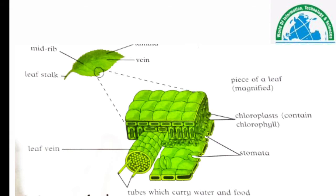Leaf میں veins یا tubes ہوتی ہیں جہاں سے ہم water اور food کو لے جا سکتے ہیں اور لا سکتے ہیں۔ اور leaf میں بہت چھوٹے چھوٹے pores ہوتے ہیں جنہیں ہم stomata کہتے ہیں، جن کے ذریعے کوئی بھی material leaf میں پہنچایا جا سکتا ہے۔